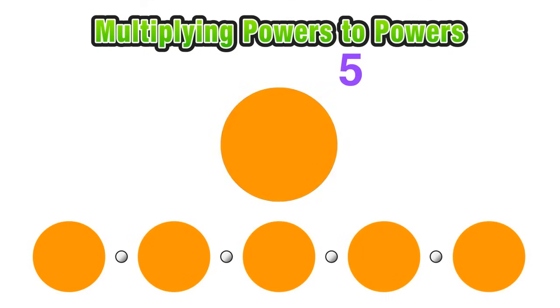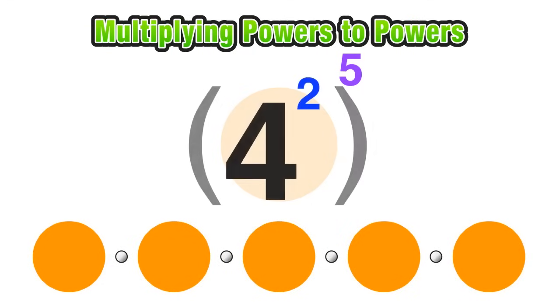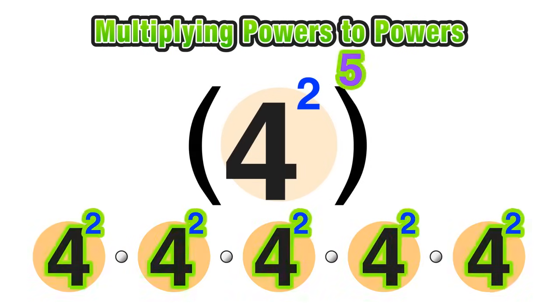Now what if instead of an orange circle, I had something like four squared being raised to the fifth power? Well, the same relationships associated with the exponents would apply, and I would treat that four squared the same way that I treated that orange circle, and I would replace each one with four squared. So now instead of five orange circles being multiplied together, I have five four squareds being multiplied together.